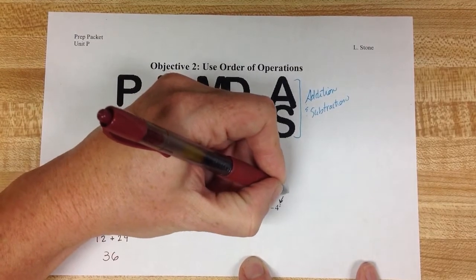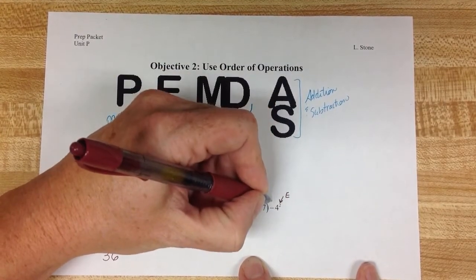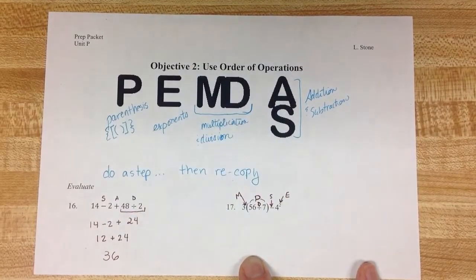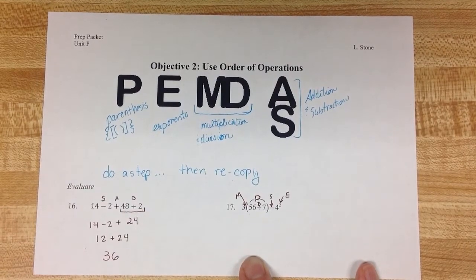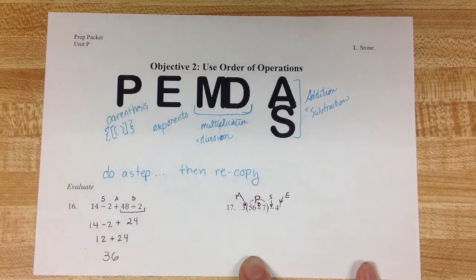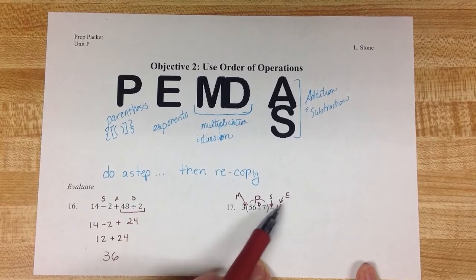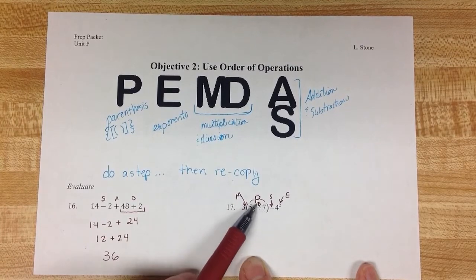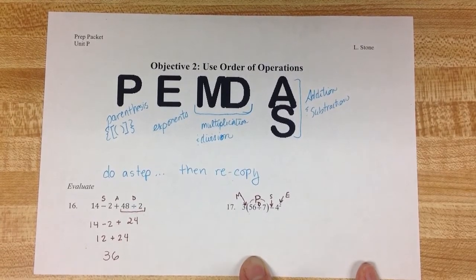Here I see an exponent. And then I also see subtraction. So following my order of operations, I'm not going to do this exponent first because this division is inside parentheses. I'm going to do the parentheses first.